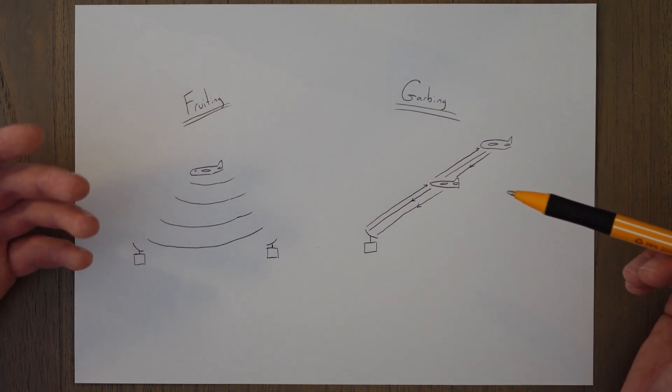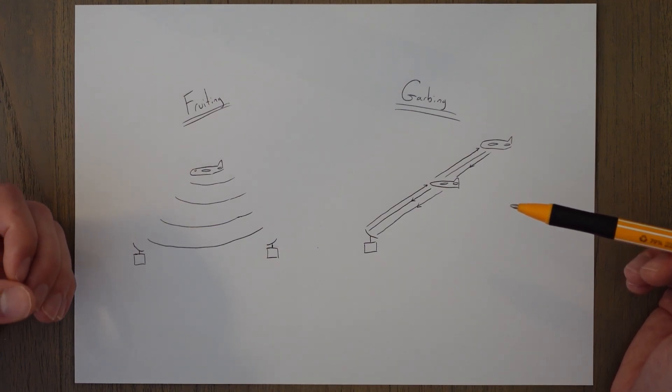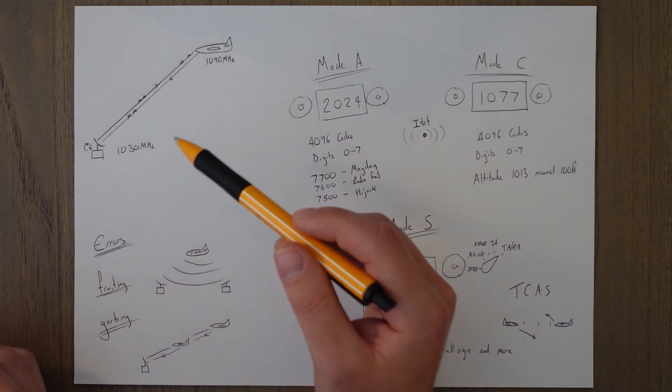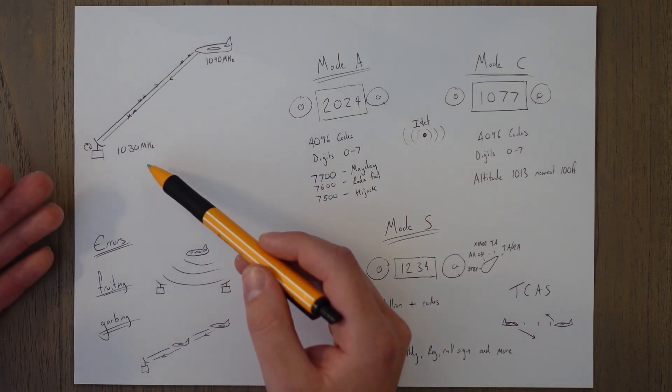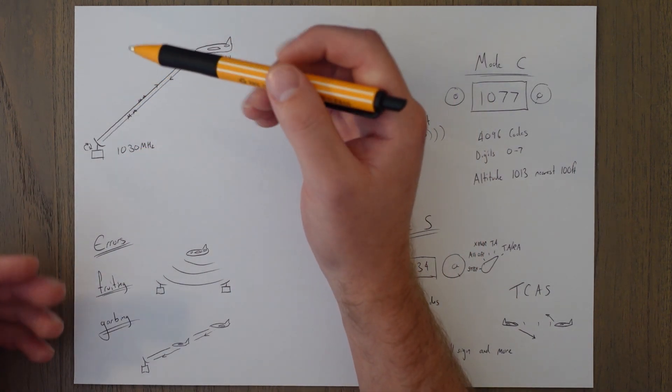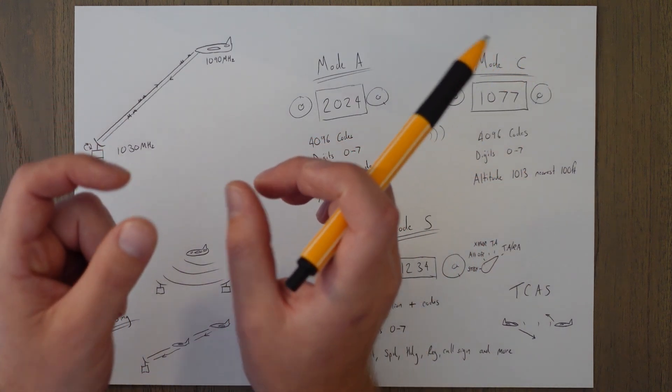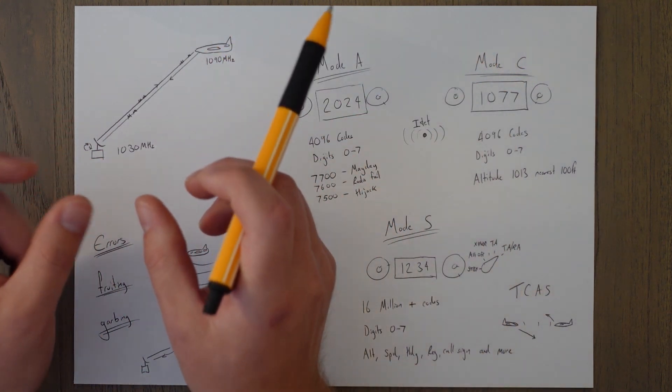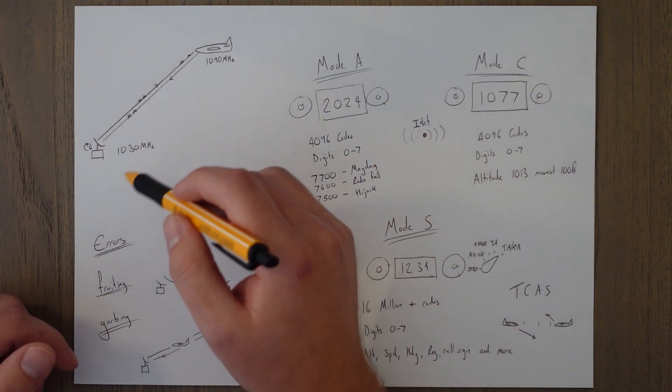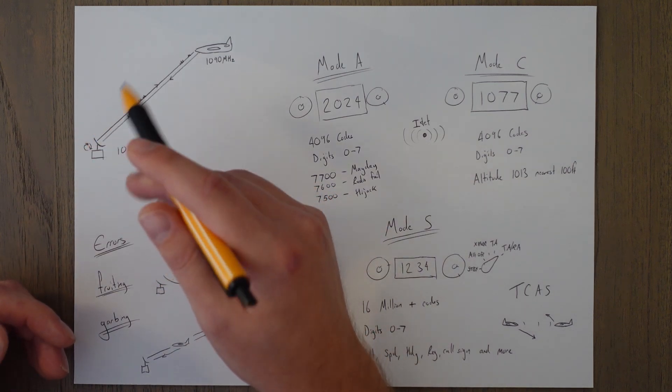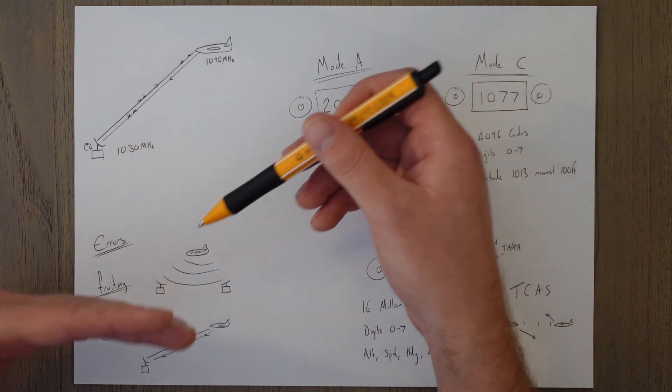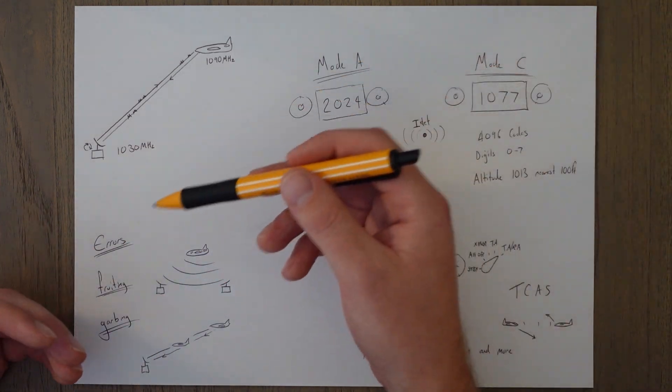So in summary then, secondary surveillance radar uses an interrogator and response principle. The interrogation is sent out on 1030 megahertz and the reply is on 1090 megahertz. It's a pulse radar, so these little pulses, the spacing in between the two pulses determines the information that is replied to. That's the question and the reply comes through the interrogator to that question. It also has the same functionality as primary radar because the system spins. Wherever it feels the interrogator come back in from, that's the direction the aircraft's in, and the time it takes the signal to go out and come back determines the distance.